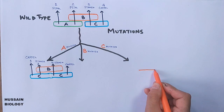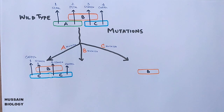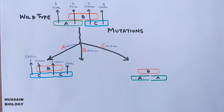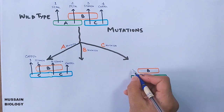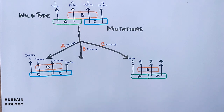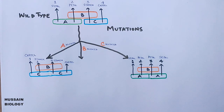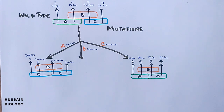In a C gene mutation, C is suppressed and A is expressed in place of C. The resulting diagram shows: whorl 1 develops sepal (A); whorl 2 develops petal (A plus B); whorl 3 also becomes petal (A plus B instead of B plus C); and whorl 4 becomes sepal (A instead of C). So the third and fourth whorls — which should have been stamen and carpel — are replaced by petal and sepal.